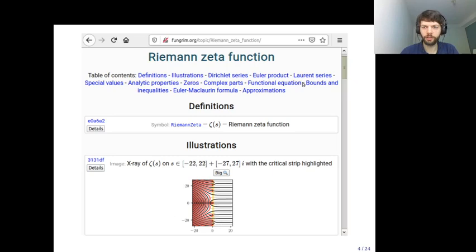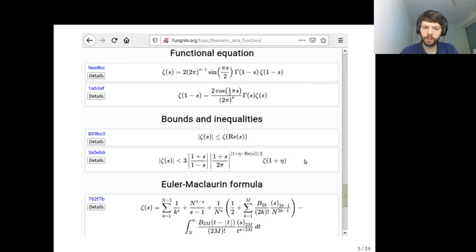There are lots of entries in different sections. First you get a definition, and there is also an illustration of the Riemann zeta function in the complex plane. Further down on the page, you get lots of different entries, for example, the functional equation, some inequalities, the Euler-Maclaurin formula, and many others.